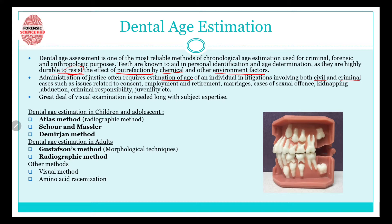For this we need a great deal of visual examination along with subject expertise. The forensic odontologist must thoroughly study each and every aspect of that particular tooth in order to determine the age of the person, and hence visual examination is a very important step in this process.